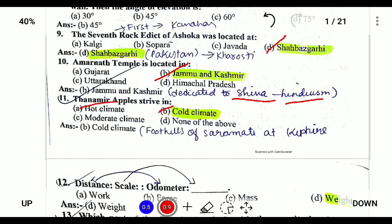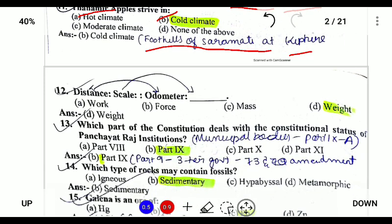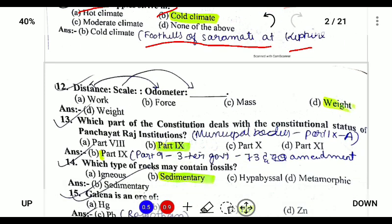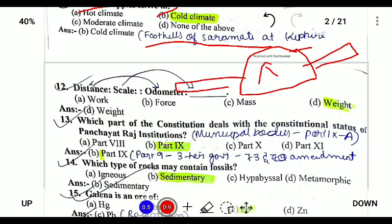This village is located in the Aohori hills of this Aramati at Kiphire, and it thrives in cold climate. We know that apples only grow in cold climates. Next, distance is measured by odometer — odometer is a device present in scooters and vehicles which shows the distance traveled.